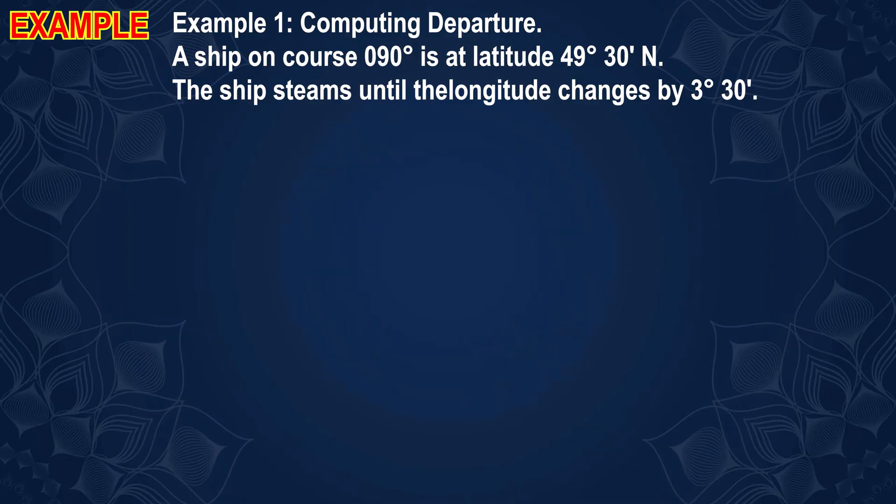Example 1: Computing departure. A ship is on course 090 degrees at latitude 49 degrees 30 minutes north. The ship continues steaming until the longitude changes by 3 degrees 30 minutes.